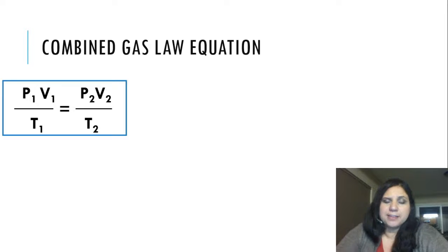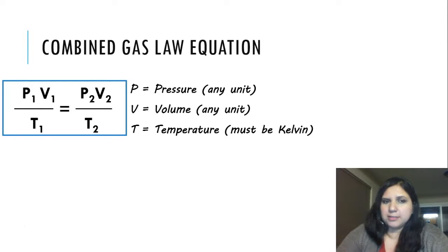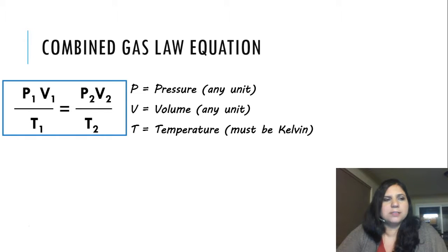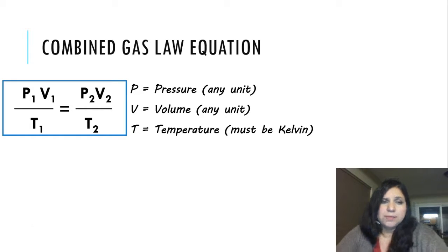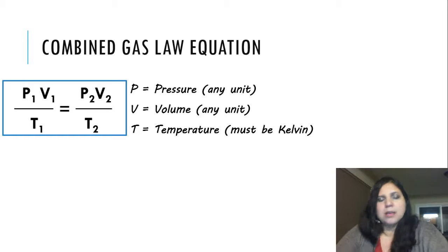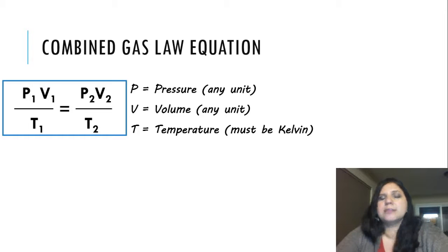This is the combined gas law equation that you will get on the test. P is for pressure, and you can keep that in any unit as long as P1 and P2 are in the same unit. V stands for volume — again they need to be in the same unit, but they can be any unit of volume like cubic centimeters, milliliters, or liters, as long as they're the same. T stands for temperature, but temperature has to be in Kelvin.